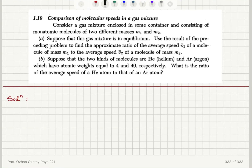This is a continuation of the previous problem: comparison of molecular speeds in a gas mixture. Consider a gas mixture enclosed in some container and consisting of monatomic molecules of two different masses, M1 and M2.